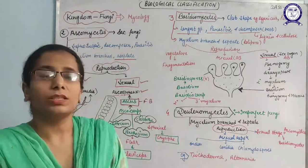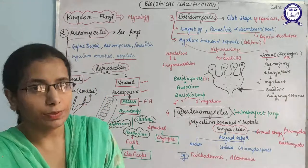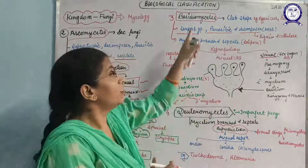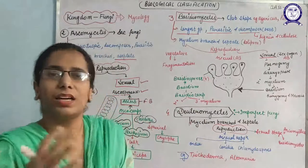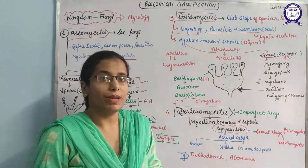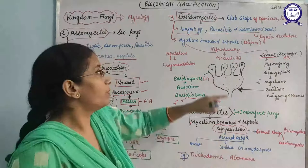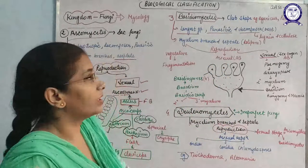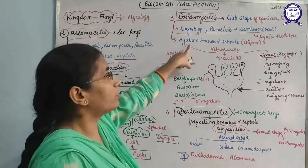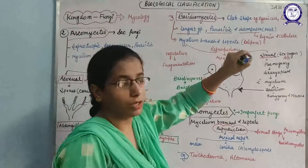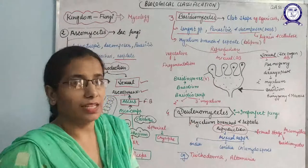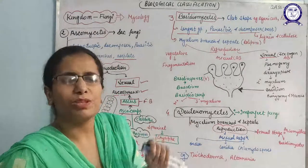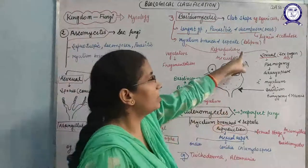In Basidiomycetes, the mycelium is branched and has septa. Because they have septa between cells, they can exchange material. For exchanging material, they have special pore-like structures in the septa known as dolipores. So, Ascomycetes were aseptate while Basidiomycetes are septate with septa containing dolipore structures.